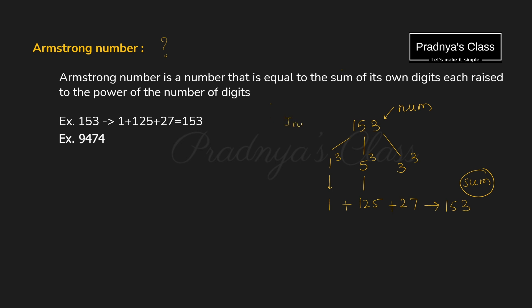Now we need to write the code. This is our input. We need to separate out the digits of a number — if you've done the sum of digits program you'll have the idea. We are separating out, calculating the cube, and summing it up. Then we compare that sum with the original number. But we cannot modify the original number, so we temporarily store it in a variable temp. Now both variables have the same number. We will take the num variable and do modulus by 10 to separate out a digit.